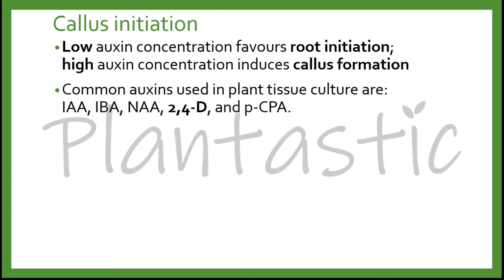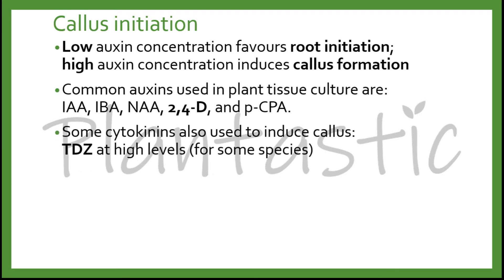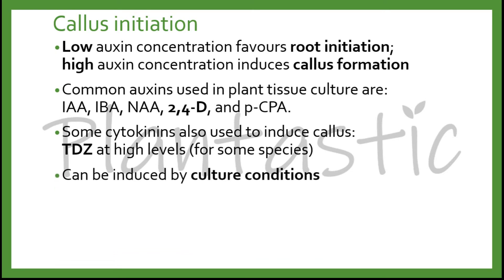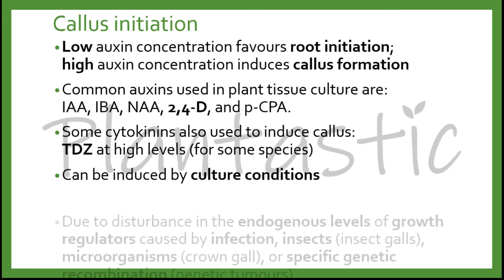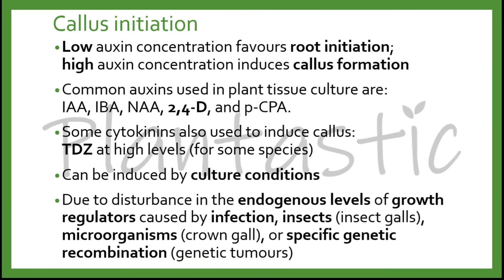2,4-D is the most common auxin used in most callous induction. Some cytokinins can also be used to induce callous — for example, TDZ at high levels for some species. Callous initiation can also be induced by certain cultural conditions, or due to disturbance in the endogenous levels of growth regulators caused by infection, insects, microorganisms, or specific genetic recombination.